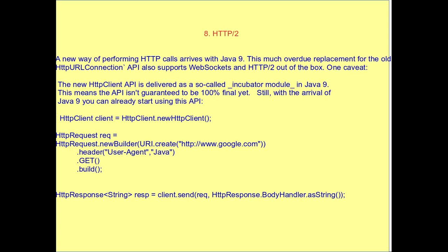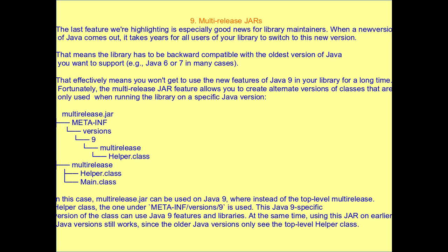Seventh, HTTP/2 client: Java 9 introduces a new way of performing HTTP calls. It is a much overdue replacement of the old HttpURLConnection API, and also supports WebSocket and HTTP/2 out of the box. The new HTTP client API is delivered as a so-called incubator module in Java 9.